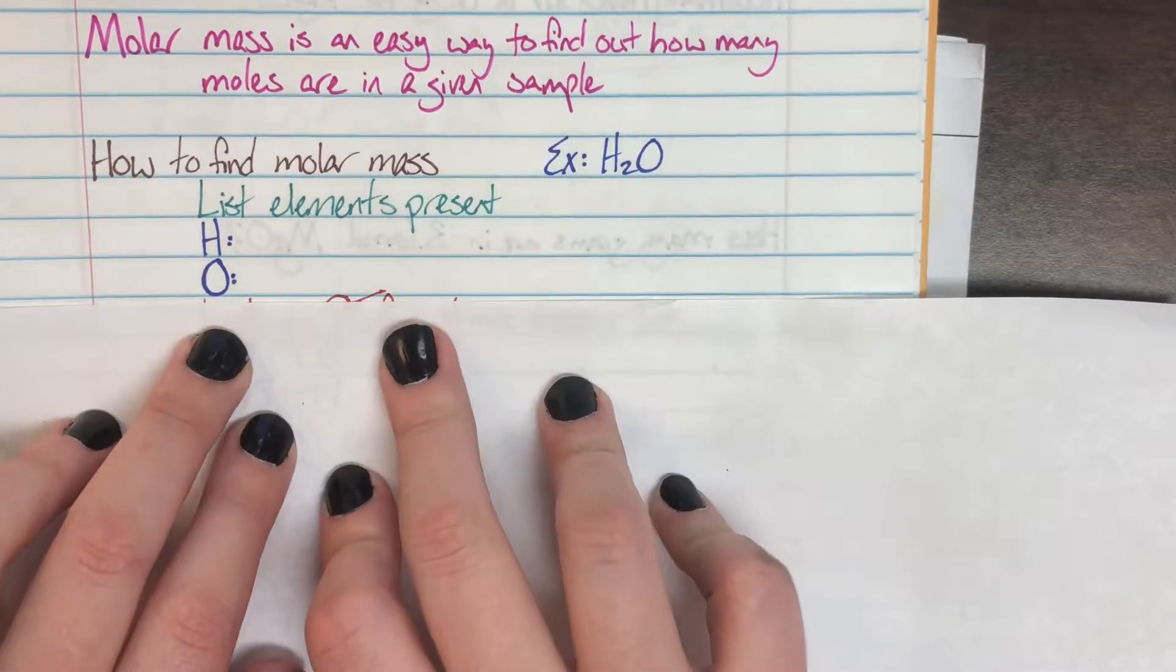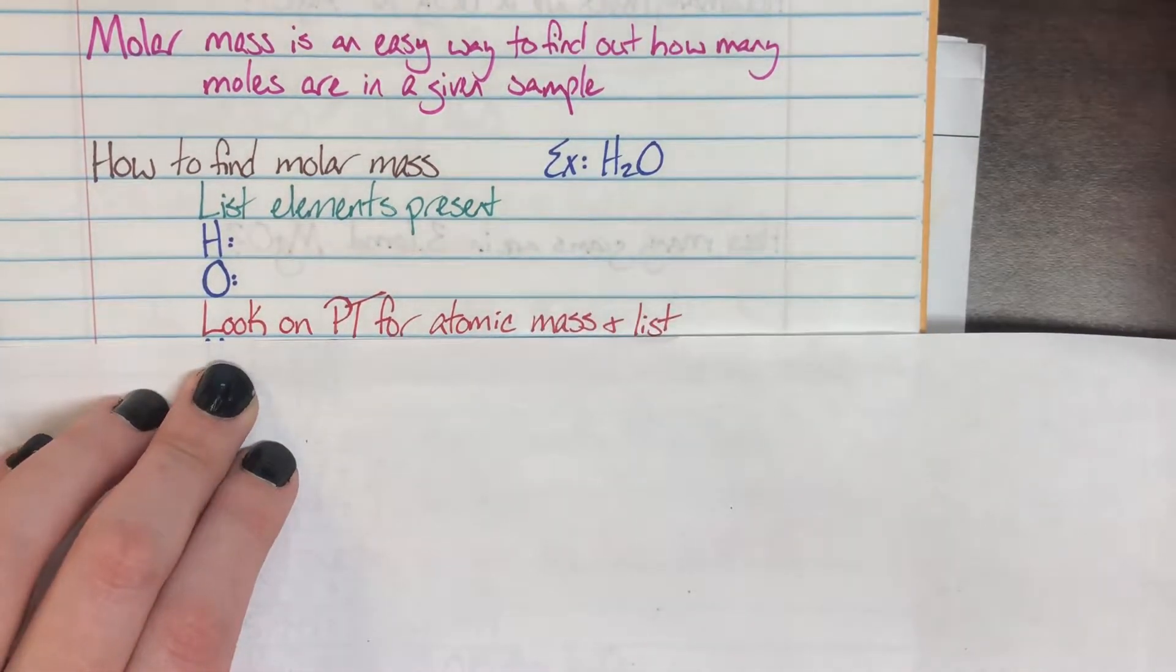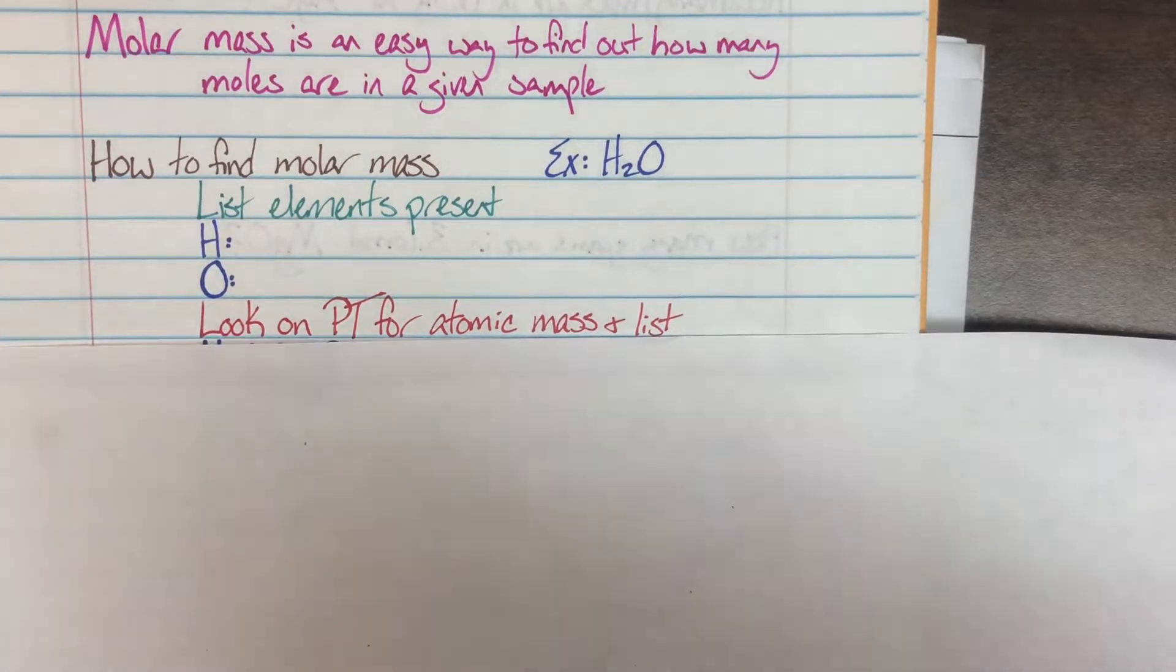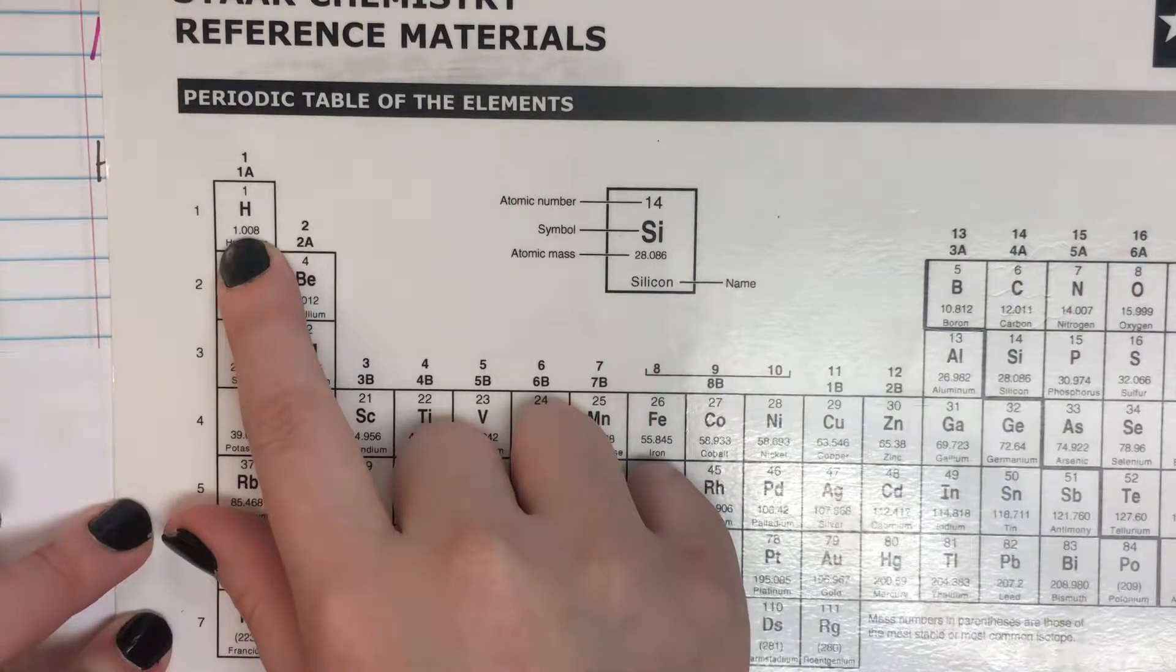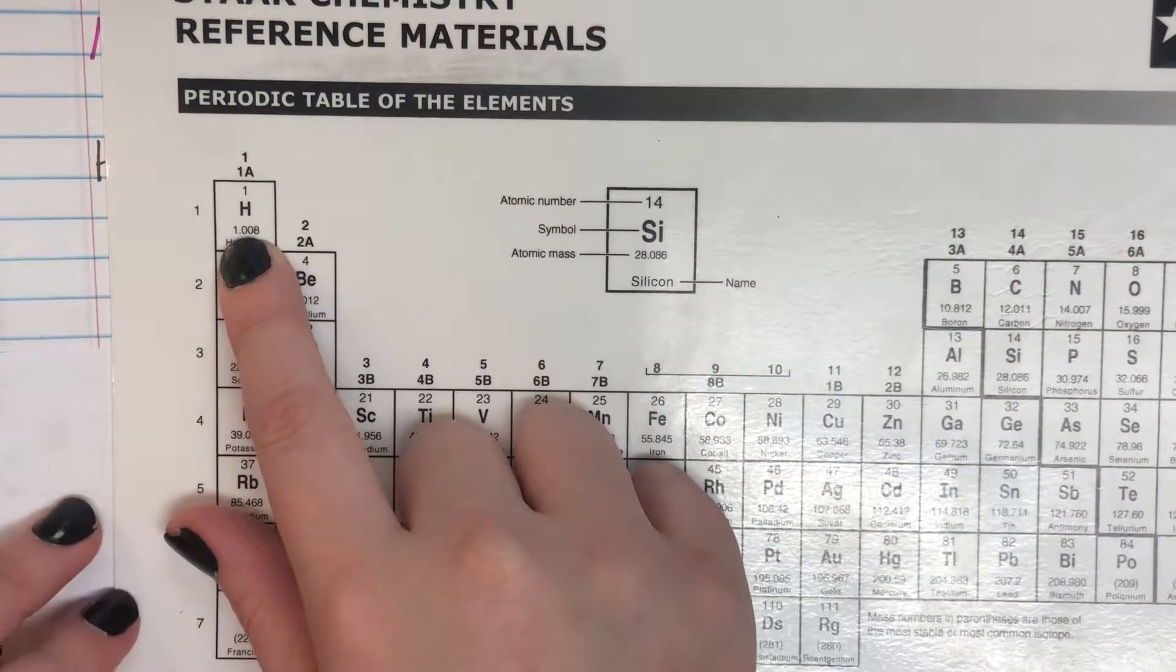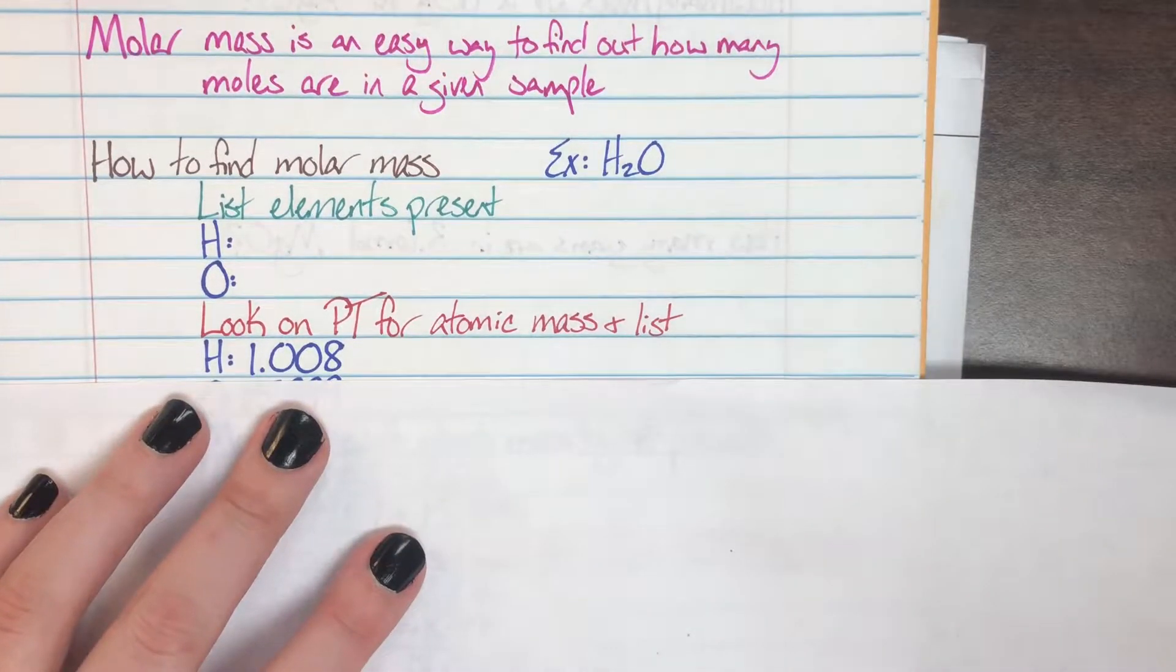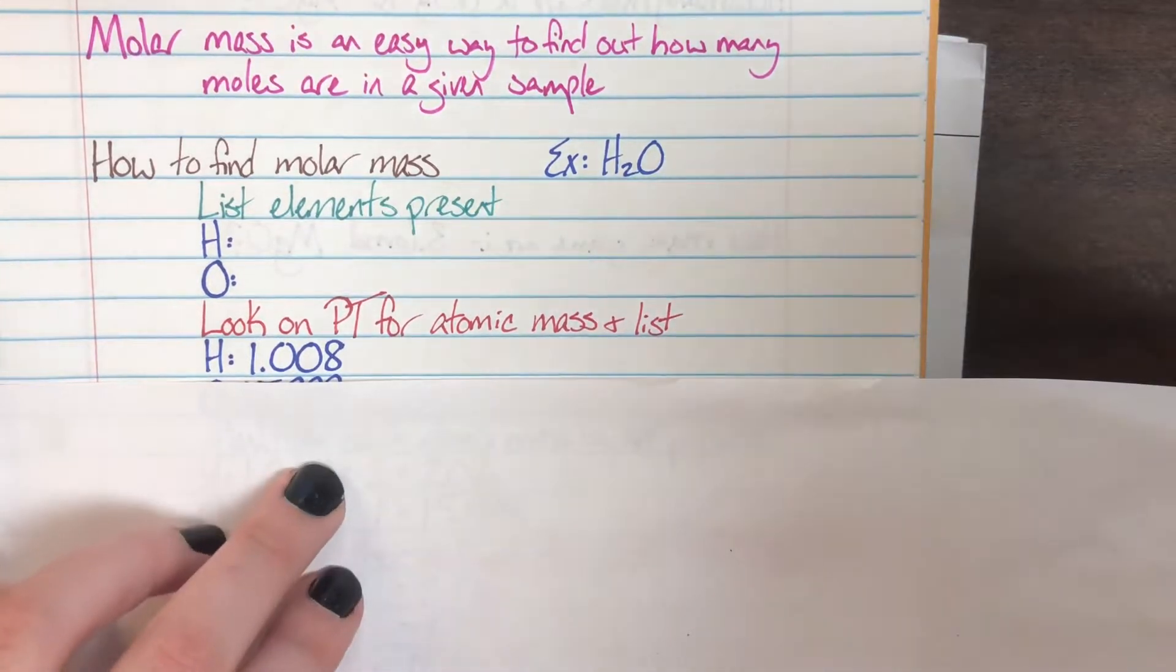Our very next step is going to be to look at our periodic table and match our mass for those elements that are actually in the compound. So we see on the periodic table that hydrogen's mass is 1.008. So on my actual thing next to hydrogen I'll write 1.008.